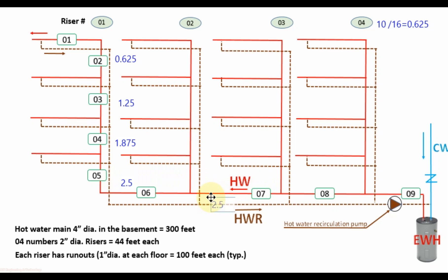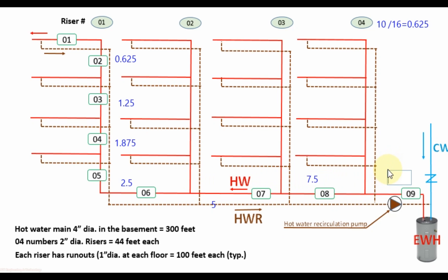For pipe segment 7, there are 2 risers connected before it, so 2.5 + 2.5 = 5 GPM. For pipe segment 8, there are 3 risers connected before it, so 2.5 × 3 = 7.5 GPM. For pipe segment 9, with 4 risers connected before it, 2.5 × 4 = 10 GPM. So the GPM at the end before the pump is 10 GPM.